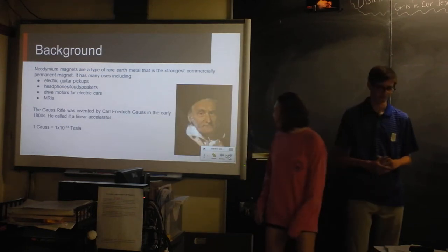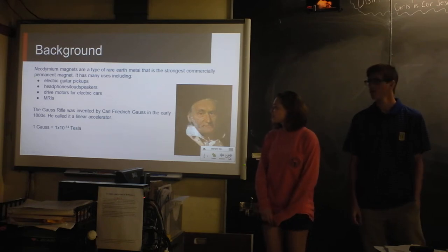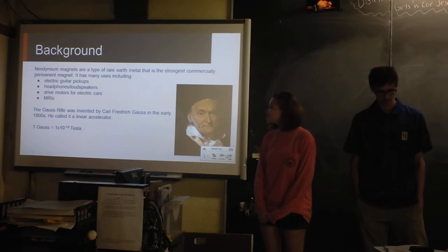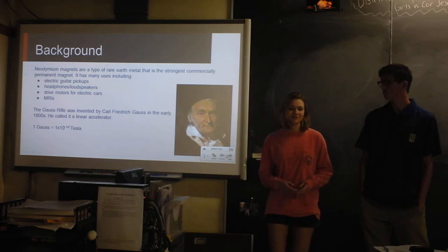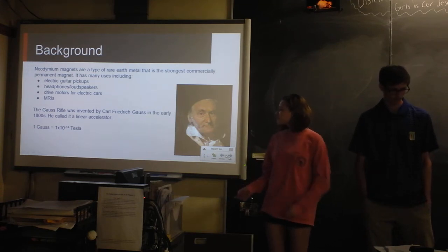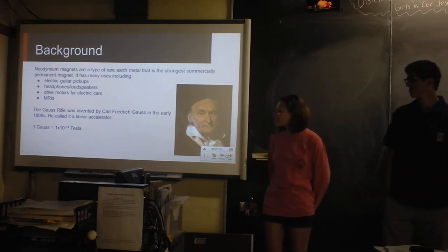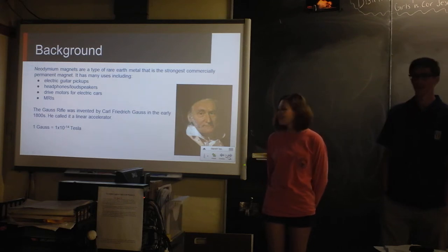So this is the background. The magnets that we used were rare earth metals, so they're really strong. They're called neodymium magnets and they're used for a lot of things like electric guitar pickups, which we did in class earlier this semester, headphones and loudspeakers, electric cars and MRIs. This Gauss rifle invention was made up by Karl Friedrich Gauss in the early 1800s. And he actually has his own unit. So 1 Gauss is equal to 1 times 10 to the negative 4 teslas. This is the measurement of magnetic field.